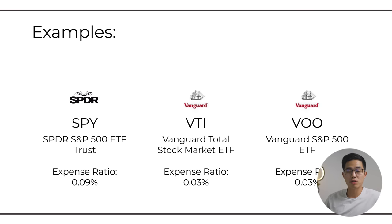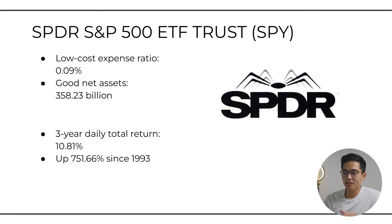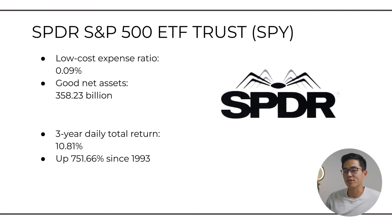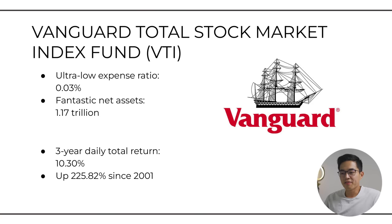Let's go over some examples of very popular ETFs. For most beginners who have zero idea what they want to invest in, these are going to be some good choices. First up is SPY, which tracks the S&P 500. The current expense ratio is 0.09%, and they have great net assets of above $350 billion. The three-year daily total return is 10.81%, and it's up 751.66% since its inception in 1993. Next is the Vanguard Total Stock Market Index Fund, VTI. This one tracks the broad US stock market as a whole with a very low expense ratio of just 0.03%, fantastic net assets over $1 trillion, a three-year daily total return of 10.3%, and it's up 225.82% since its inception in 2001.